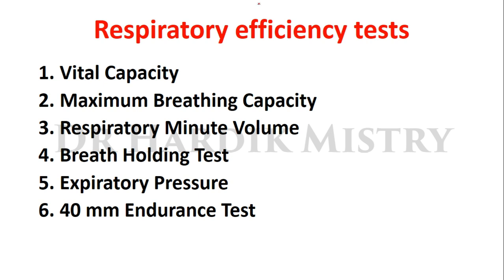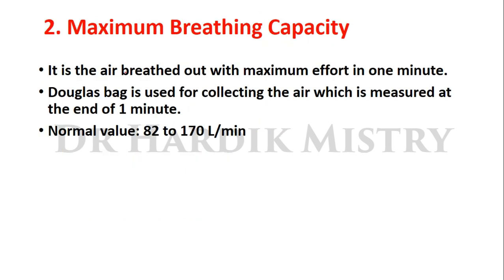Now moving to the respiratory efficiency tests. We are going to assess six tests: vital capacity, maximum breathing capacity, respiratory minute volume, breath holding test, expiratory pressure, and the 40 mm Hg endurance test. Vital capacity was already completed. Continuing with maximum breathing capacity — it is the air breathed out with maximum effort in one minute. A Douglas bag is used for collecting the air, measured at the end of one minute. Normal value is 82 to 170 liters per minute.